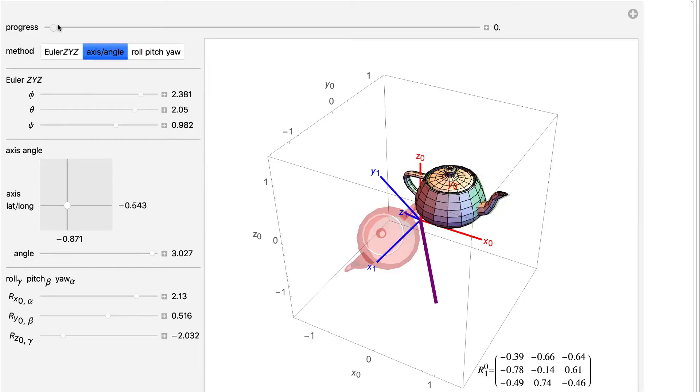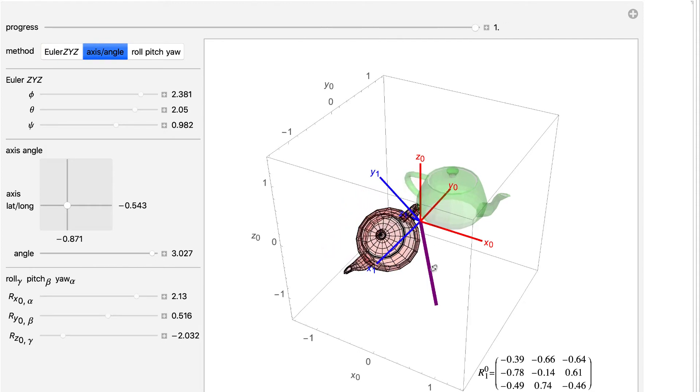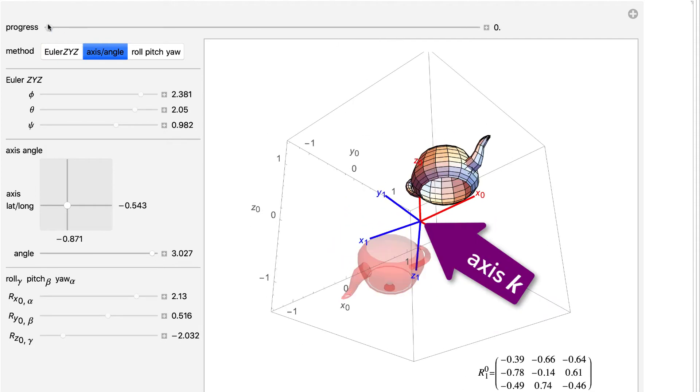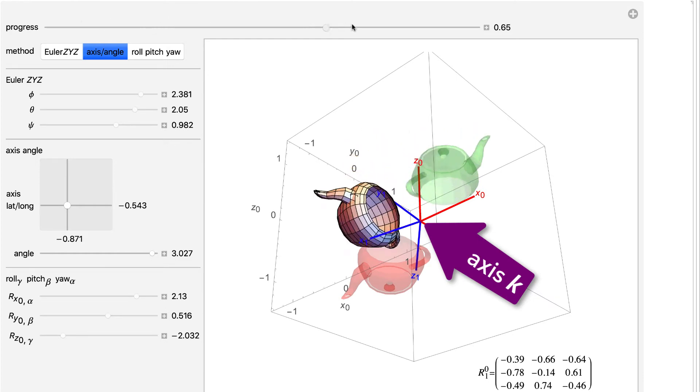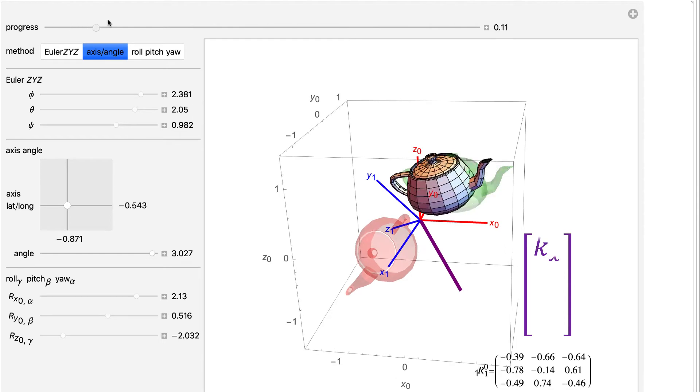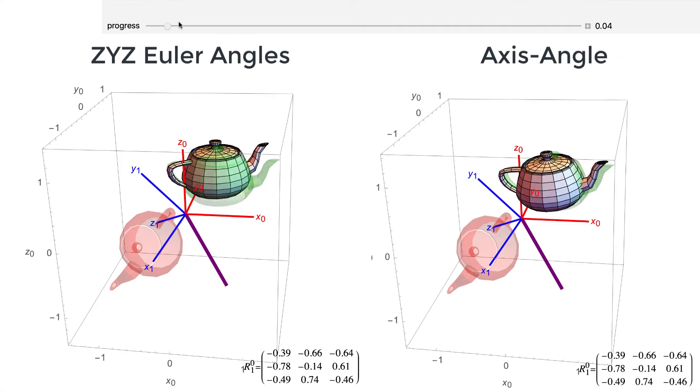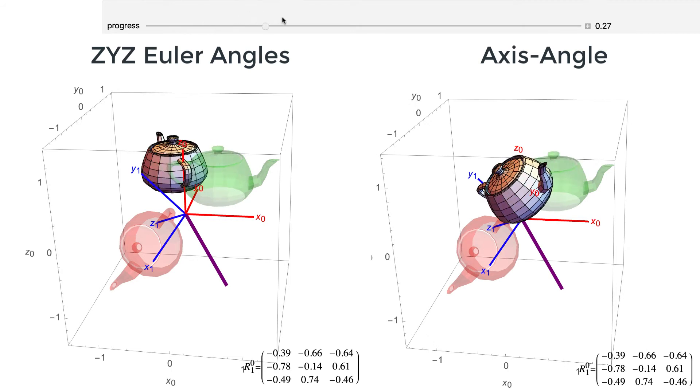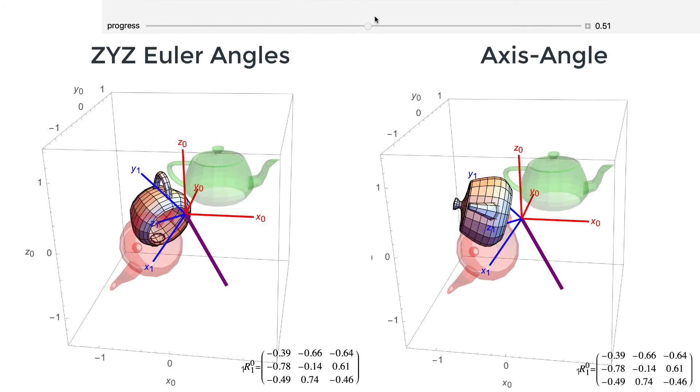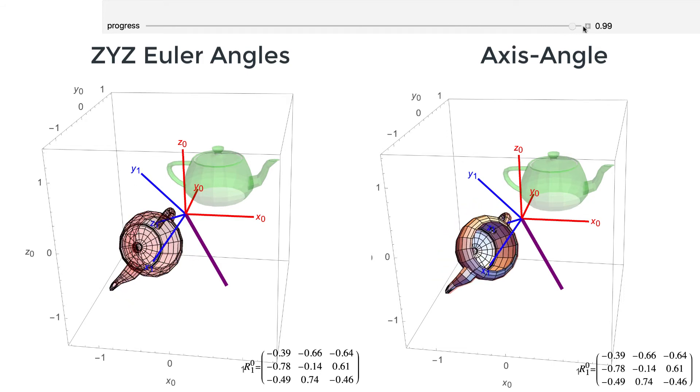Our second parameterization uses axis angle parameterization, a rotation of omega about the unit axis k, where k is kx ky kz. This axis is drawn in purple. Watch this rotation. Simply rotate omega about our axis k, and give us the exact same rotation that we had from the Euler angles.